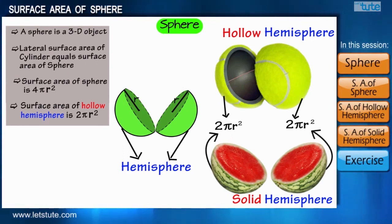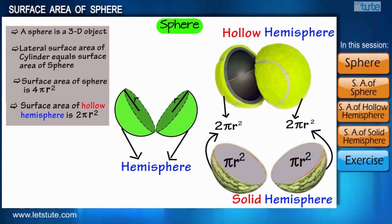One would be the curved surface which surface area will be 2πr², and the other would be the circular surface which area will be πr². So surface area of a solid hemisphere will be altogether 3πr².